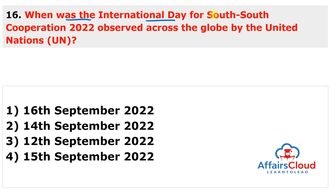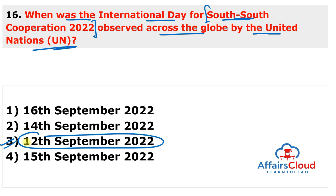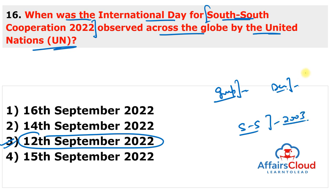The International Day for South-South Cooperation 2022 was observed on 12th September 2022 to highlight the importance of cooperation among people and countries of the developing world, known as the Global South. The first United Nations Day for South-South Cooperation was observed in 2003. The 2022 events were organized during the Global South-South Development Expo.